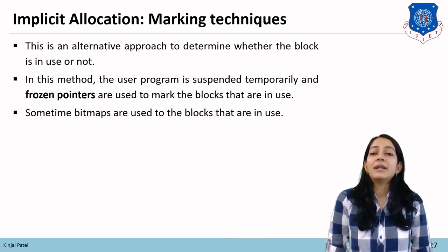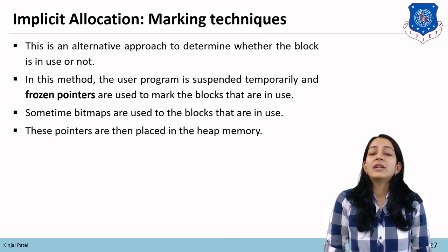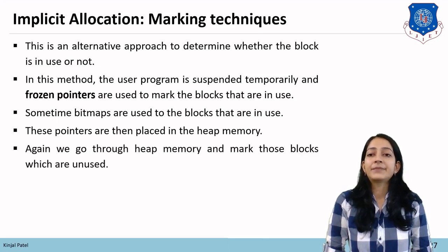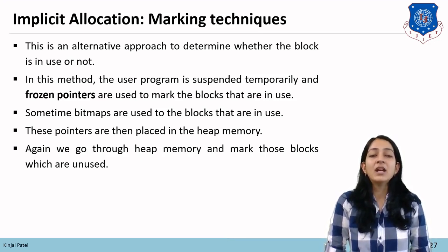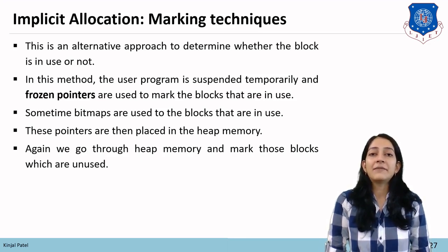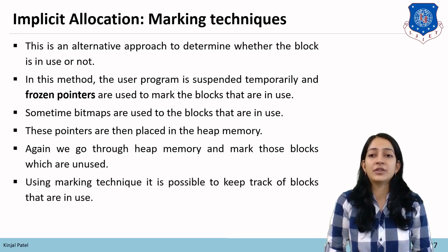Sometimes bitmaps are used to track blocks that are in use. These pointers are then placed in heap memory, and we go back to heap memory to mark those blocks which are unused. We can then use those unused blocks to allocate memory. Both the reference counter method and marking technique are used in implicit allocation to find free blocks.